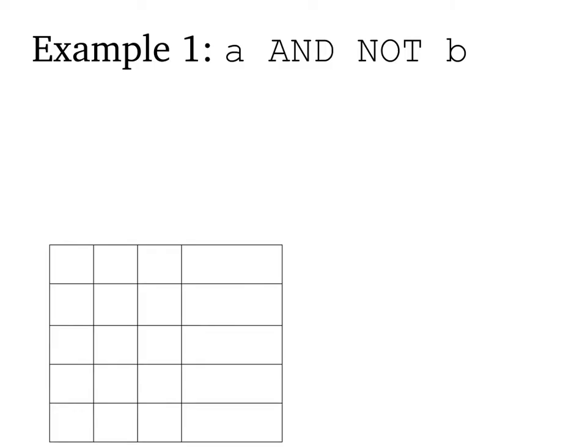So the first example is very simple. We've got A and not B. And we want to notice two things about Boolean expressions: one, its inputs, and two, the operations that are being used in the expression. So in this example, we've got two inputs, A and B, and two operations, and and not.